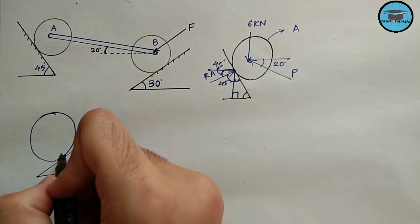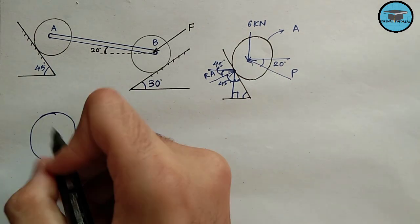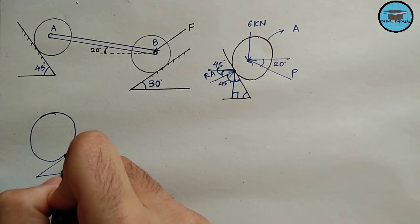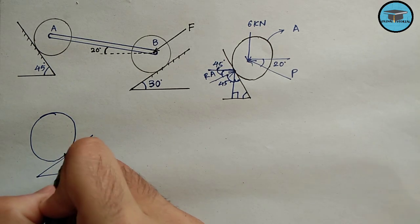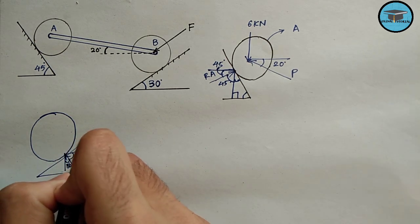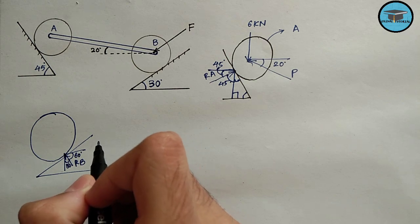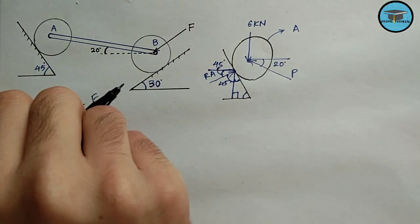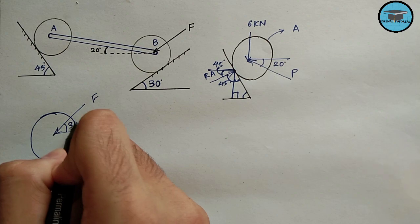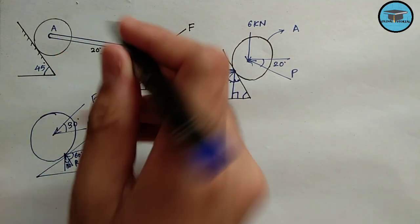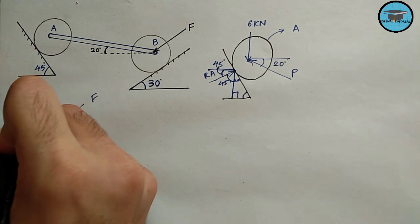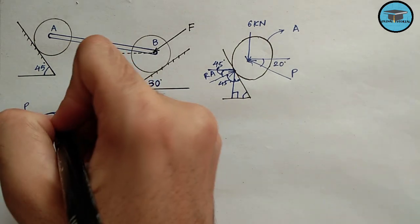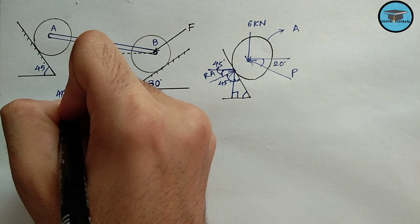Now drawing the free body diagram of cylinder B. At the contact point, there will be a normal reaction perpendicular to the surface, named R_B, inclined at an angle of 30 degrees with the horizontal. There will also be force F acting parallel to the plane, inclined at 30 degrees with the horizontal, force P acting at 20 degrees with the horizontal, and the weight of 4 kN acting downward.